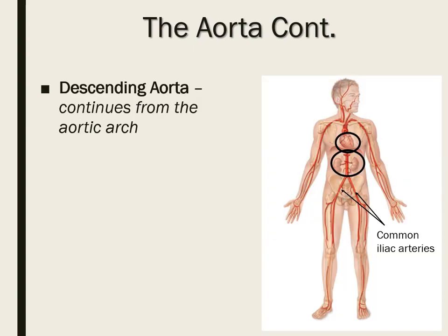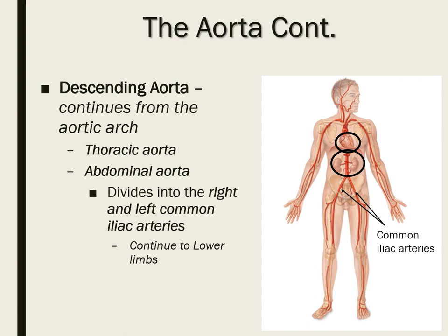Continuing along the aorta, we pass through the thoracic aorta in the thoracic cavity and into the abdominal aorta. After giving branches to abdominal organs, the aorta terminates by splitting into the left and right common iliac arteries, which continue down to the lower limbs.